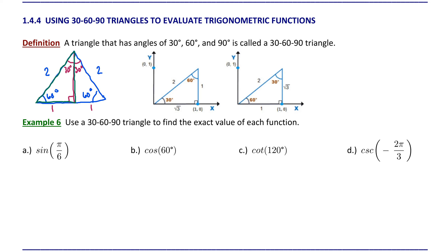We can calculate the length of that vertical segment using the Pythagorean theorem. If we take the sum of the squares of the legs, that's 1 squared plus the vertical leg squared — we'll call it b — equals hypotenuse squared, then we can solve for b. Squaring those numbers, subtracting 1 from both sides, and taking the positive square root of both sides, we can see that the length of that vertical segment is square root of 3.